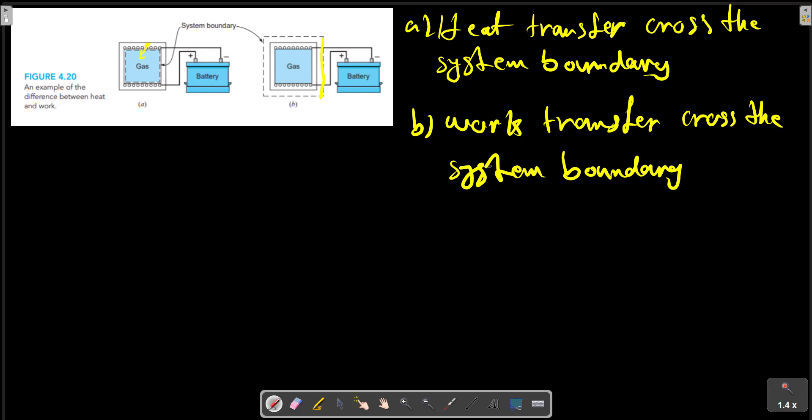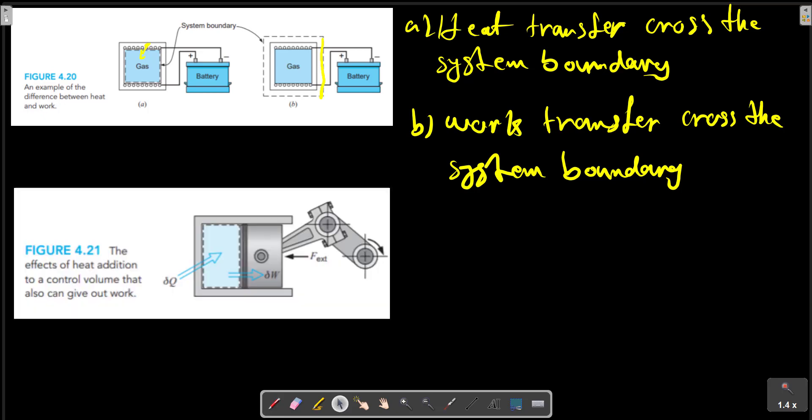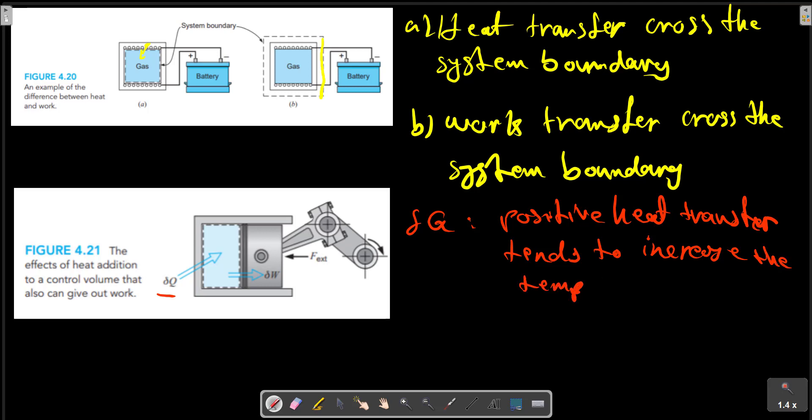Or as another example, consider a gas in a cylinder fitted with a movable piston. As shown in the picture, there is a positive heat transfer to gas. This tends to increase the temperature.